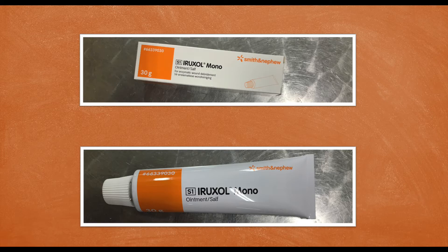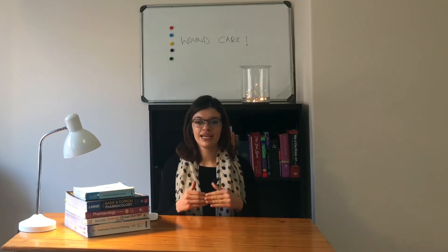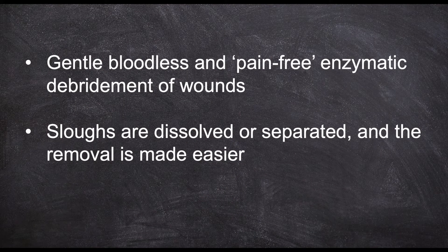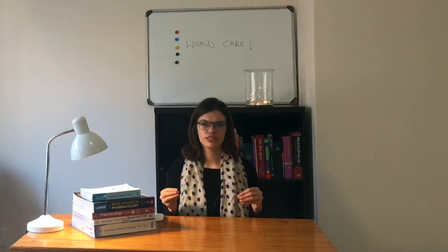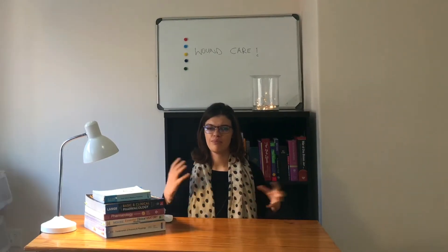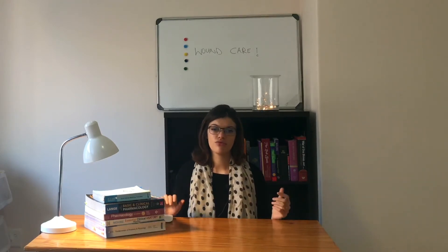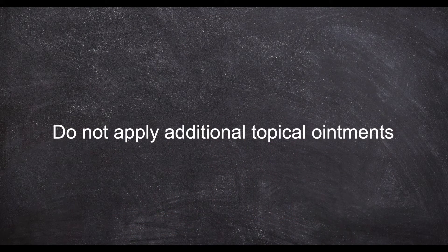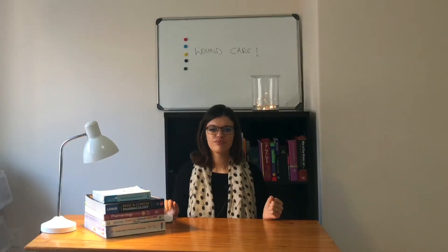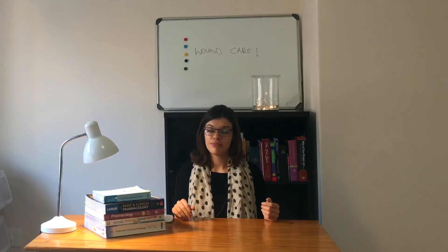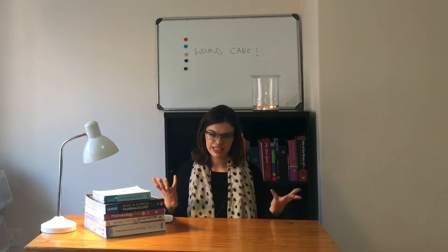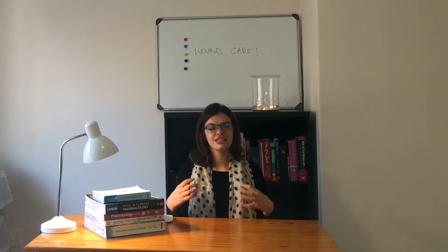The next product is Euryxol, an ointment containing collagenase, Clostridium peptidase A, and proteases. It works by causing enzymatic debridement of wounds in a gentle, bloodless and pain-free manner, dissolving and separating slough to make removal easier. Indications include wounds involving ulceration, pressure sores, and healing necrotic wounds. The contraindication is that it should not be applied alongside another topical ointment, as this reduces its effectiveness. As a precaution, a burning sensation and pain may be felt on the wound surface at the beginning of treatment, so it is important to inform the patient so they are not alarmed.